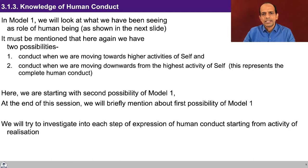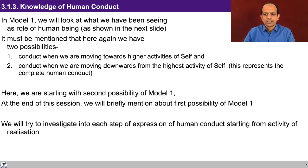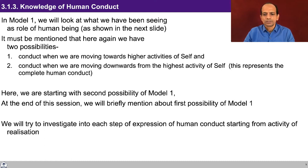We will start by discussing the second part of model one — when the higher activities guide the lower activities. Towards the end of the lecture we will also discuss the possibility when we are moving from lower activities to the higher activities. So conduct when we are moving towards higher activity of the self, and conduct when we are moving downwards from the higher activity of the self — this represents the complete human conduct.